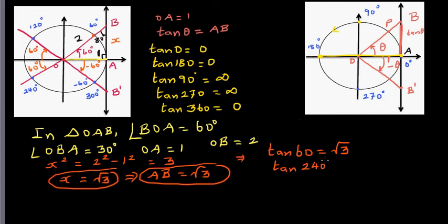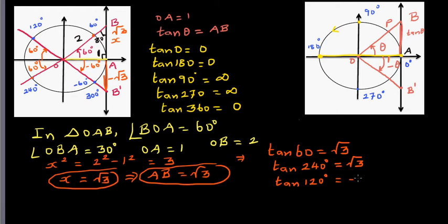When the particle hits 120 degrees, you join that point to the tangent and get a segment AB' by symmetry of the same length, but on the negative side. So tan 120° = −√3. Similarly, tan 300° = −√3.